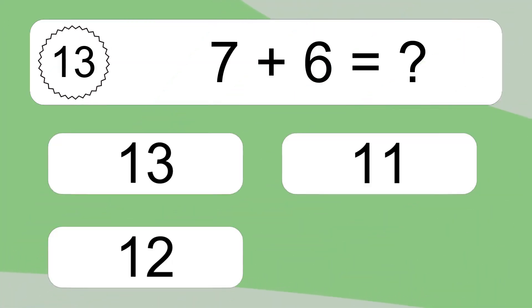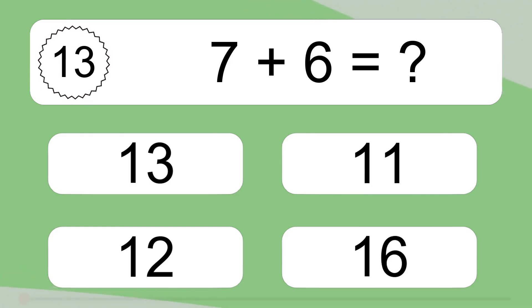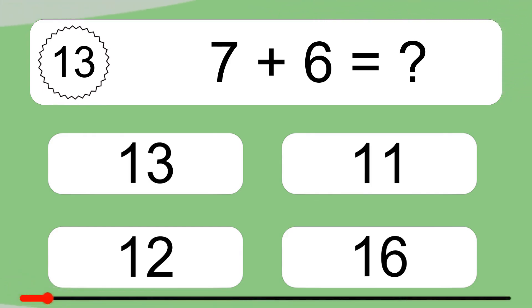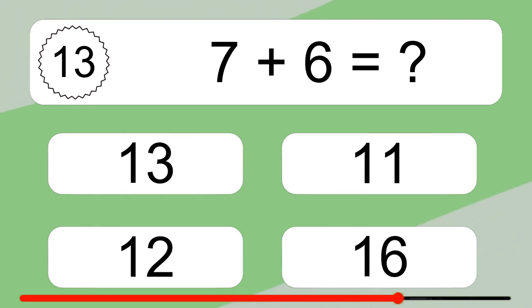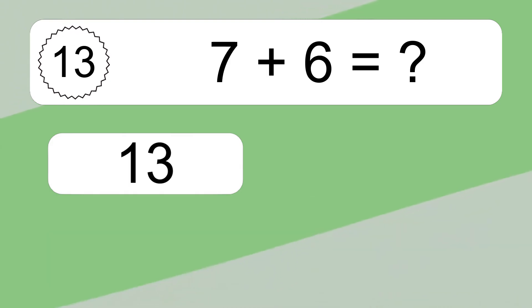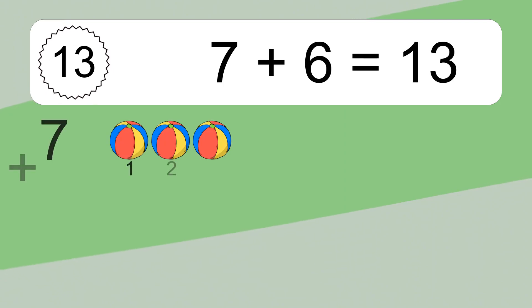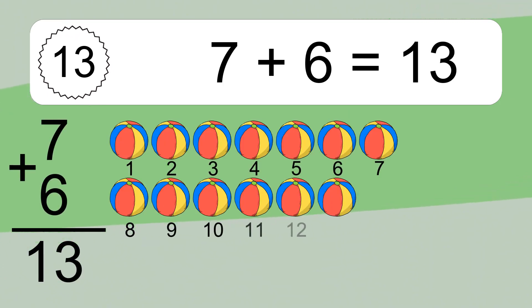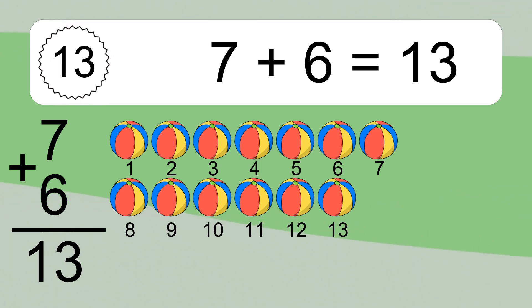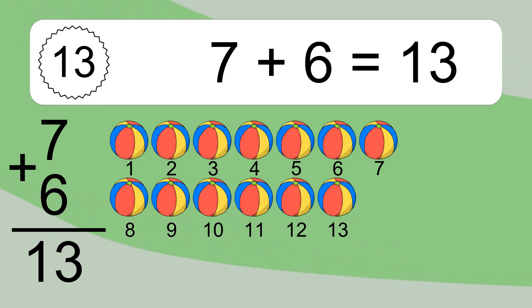7 plus 6 equals what? 7 plus 6 equals 13. Let's count it: 1, 2, 3, 4, 5, 6, 7, 8, 9, 10, 11, 12, 13.